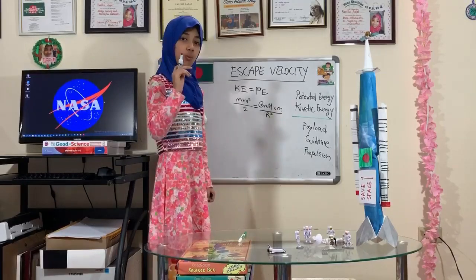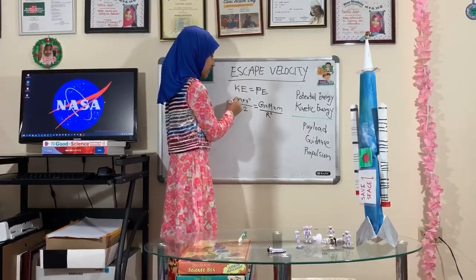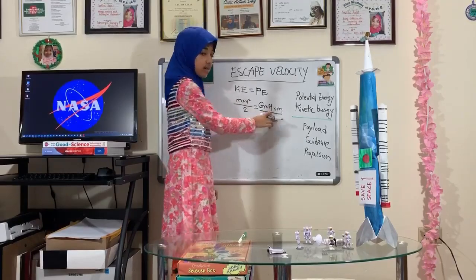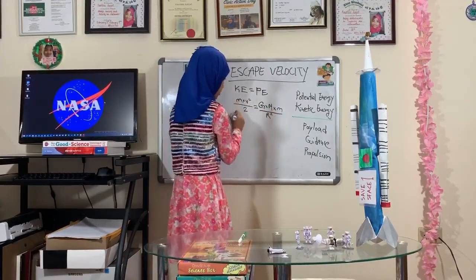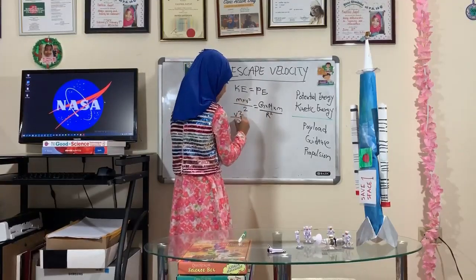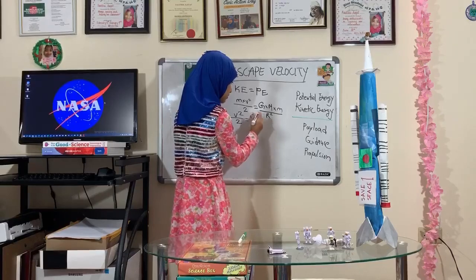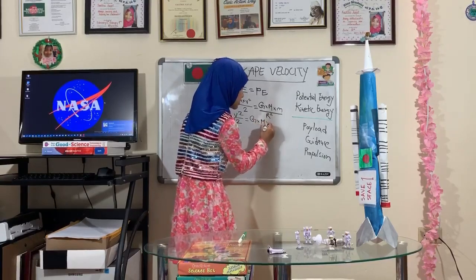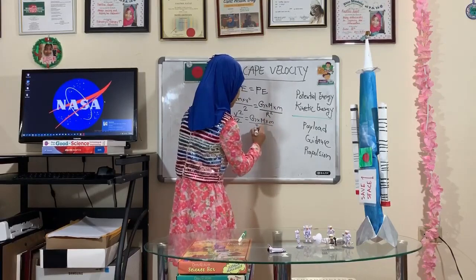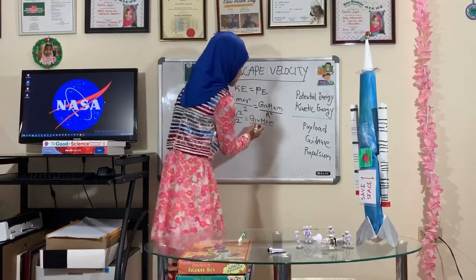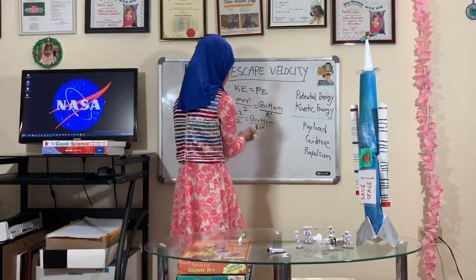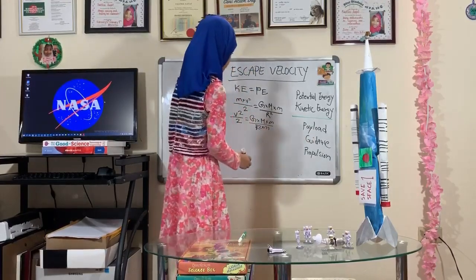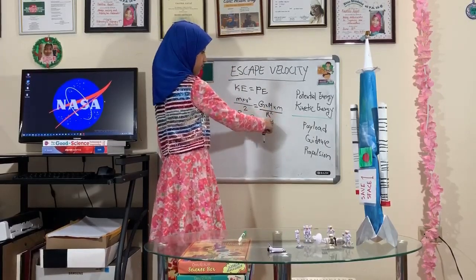First, I take the mass of the rocket from the kinetic energy side and multiply it by the radius squared. Taking that out, what's left on one side is velocity squared divided by two, and on the other side we have the gravity of the earth times the mass of the earth times the mass of the rocket divided by radius squared, divided by radius squared. Now I can cancel out the masses of the rocket on both sides.